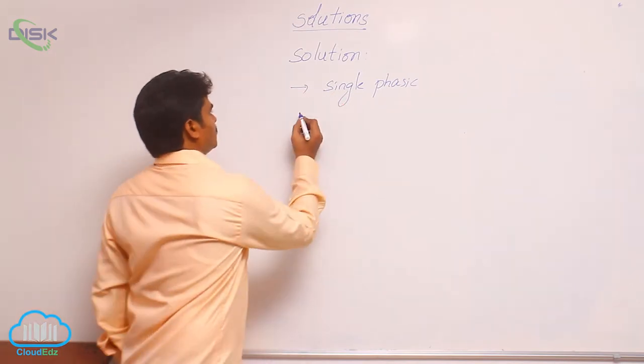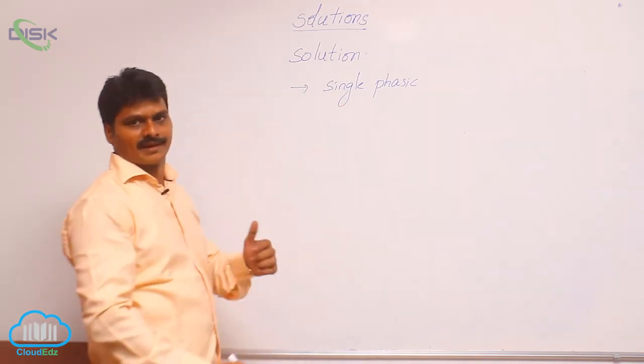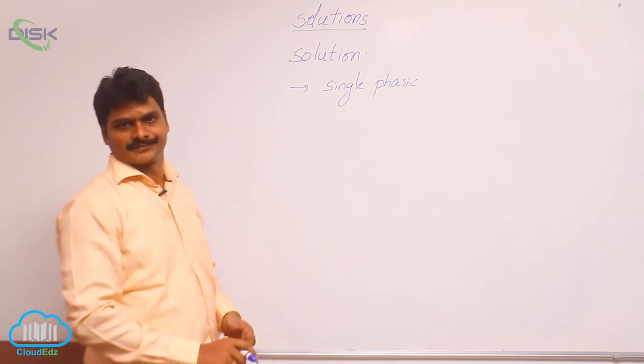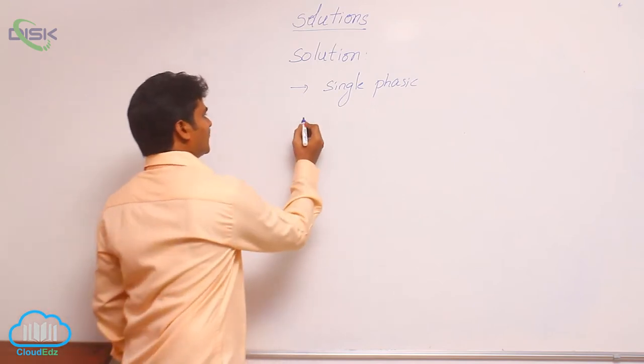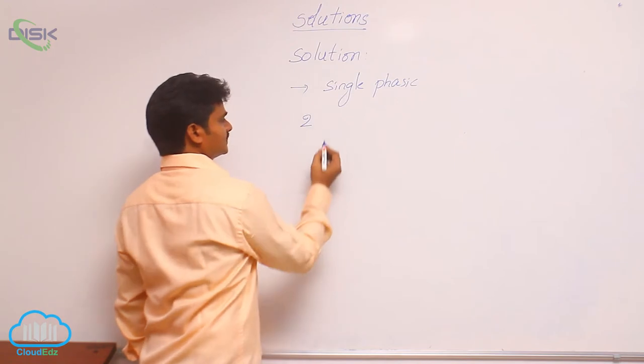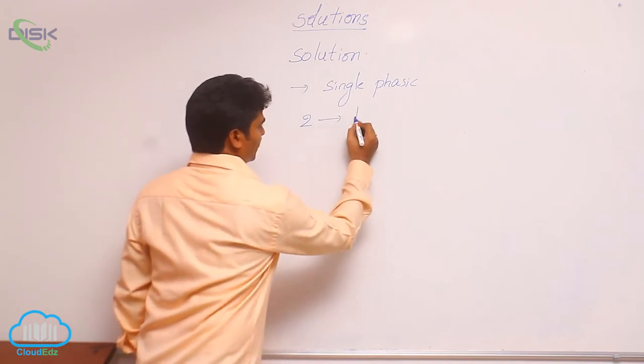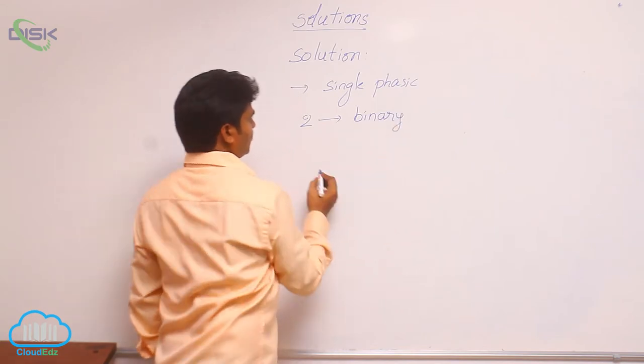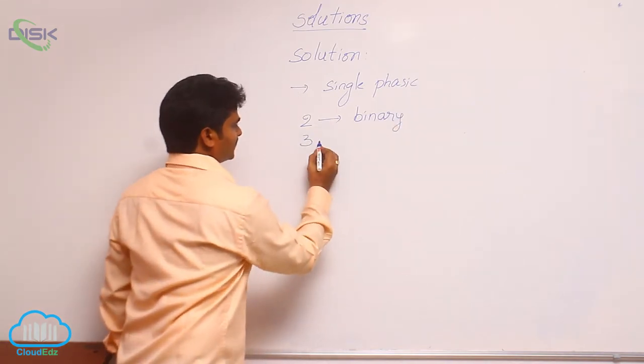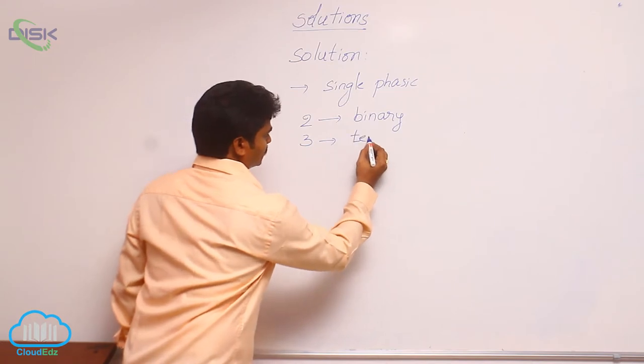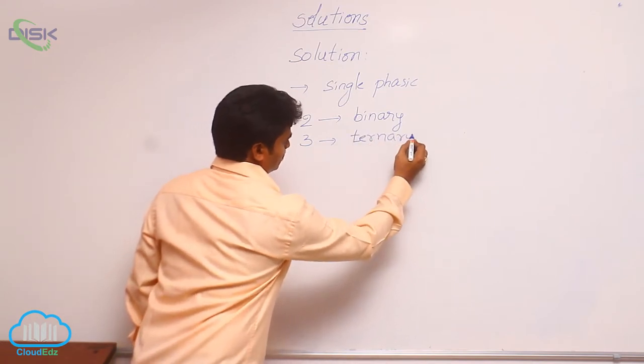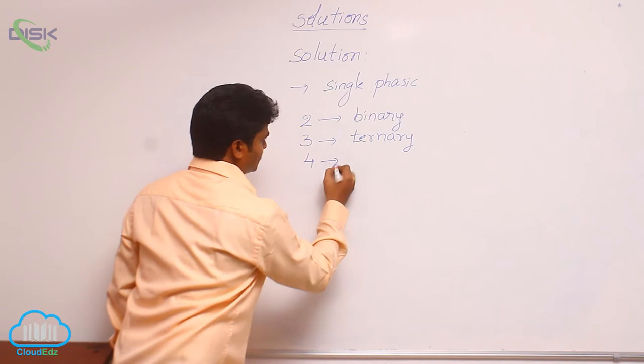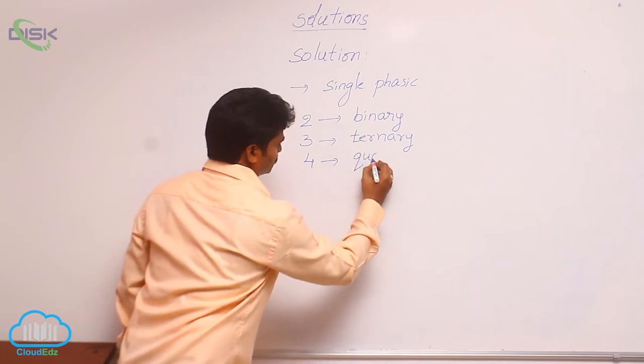Solutions are classified into different types based on the components present in it. If a solution contains only two components, that is called binary solution. If it contains three components, that is ternary solution. If it contains four components, that is quaternary solution.